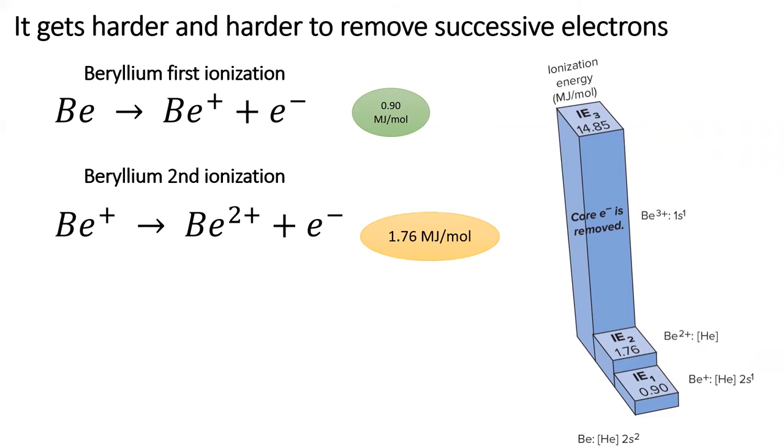Removing a second electron from beryllium is even harder as we have to pull a negative charge away from a 2 plus positive charge. Beryllium's second ionization energy is about twice as much as its first at 1.76 megajoules per mole.